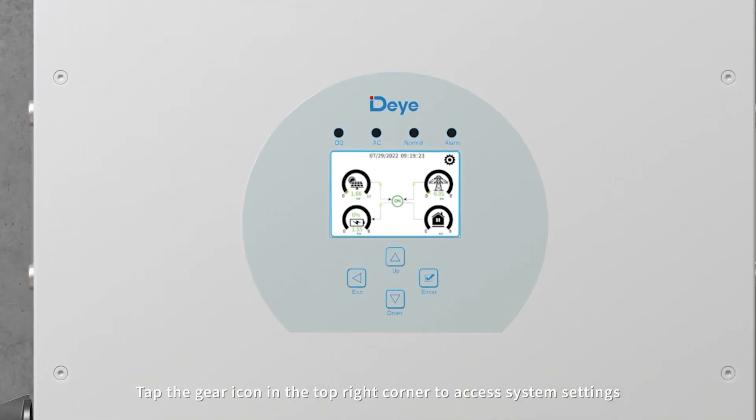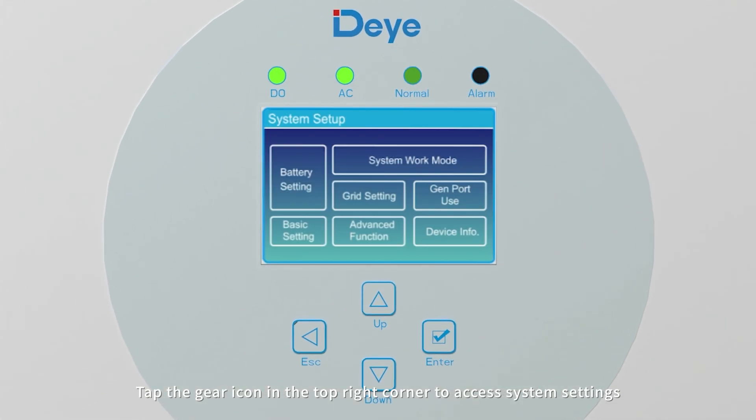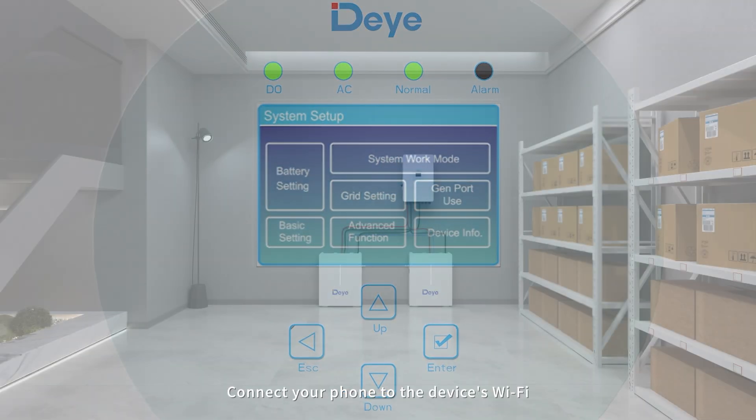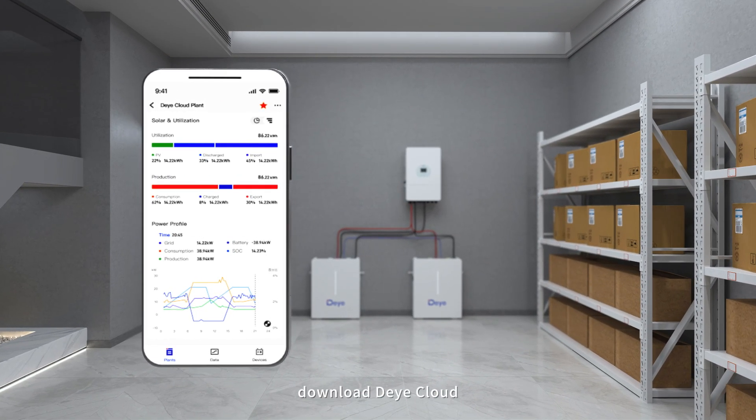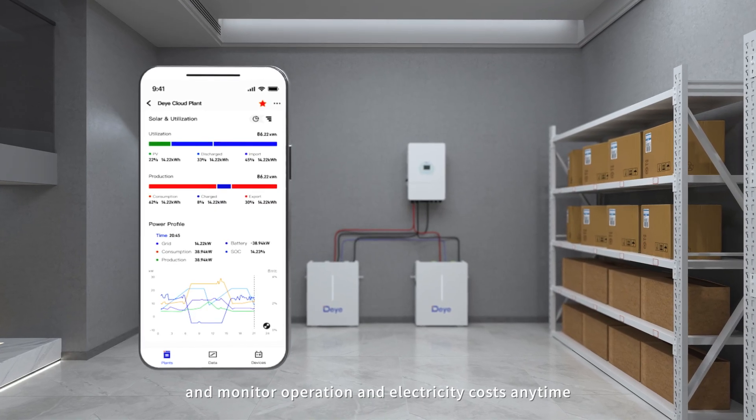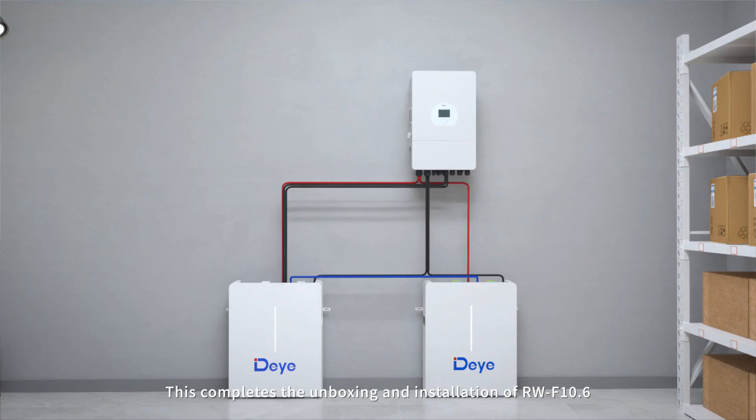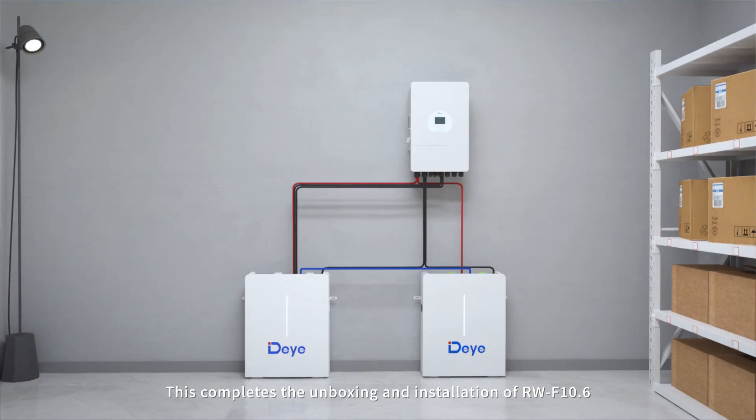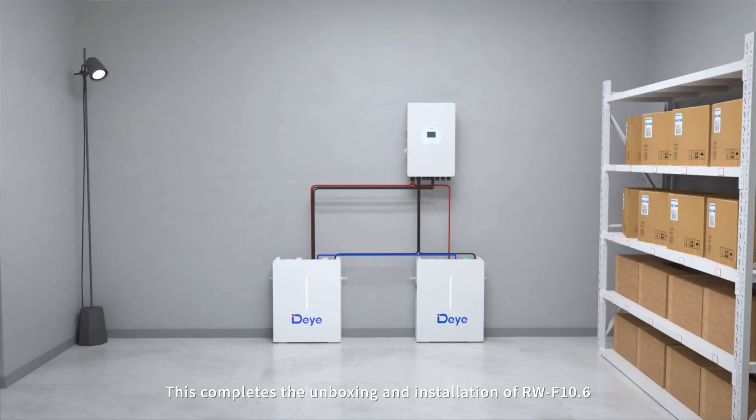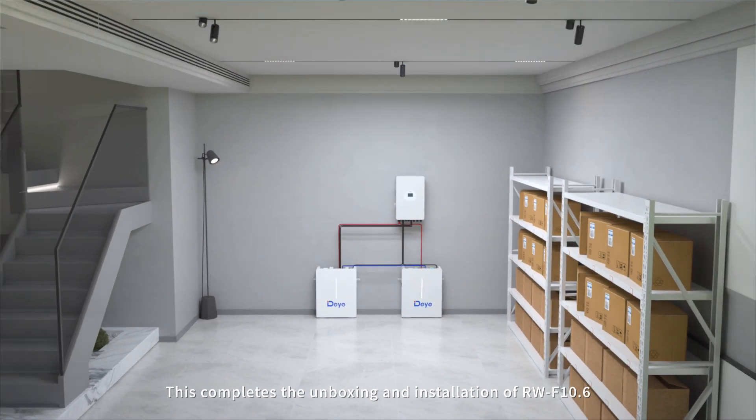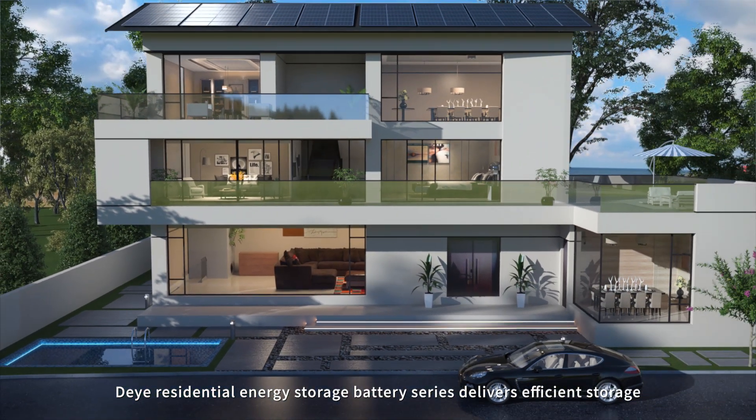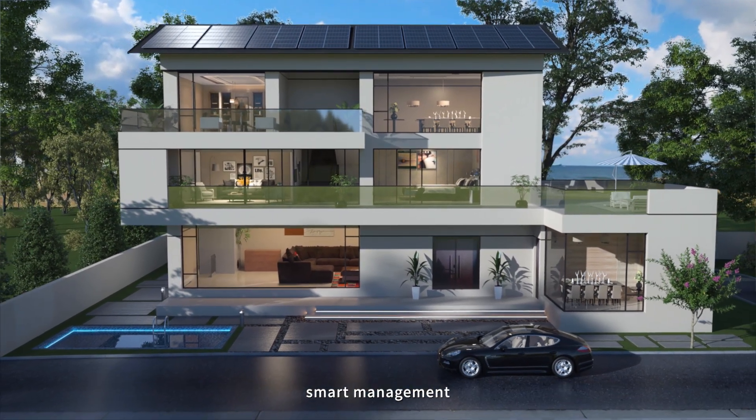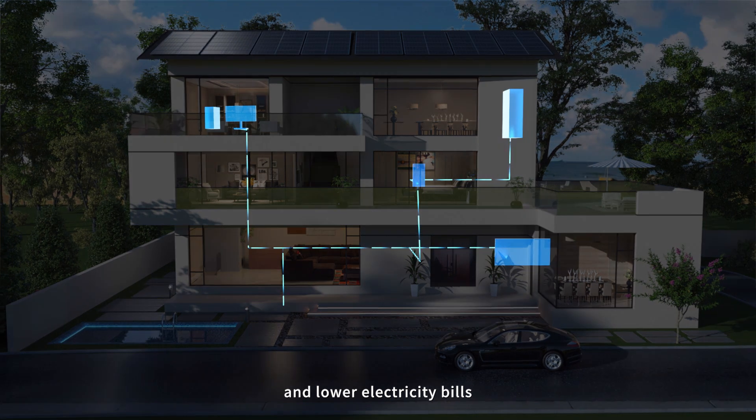Tap the gear icon in the top right corner to access system settings. Connect your phone to the device's WiFi. Download Daya Cloud and monitor operation and electricity costs anytime. This completes the unboxing and installation of RW-F10.6. Daya residential energy storage battery series delivers efficient storage, smart management, and lower electricity bills.